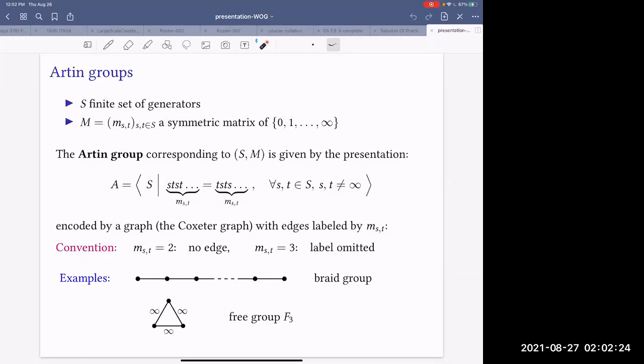If M_ST is infinite, we don't consider any relation between these elements. This sort of information is very conveniently encoded by the Coxeter graph, with vertices in correspondence with S and edges labeled by these M_ST numbers, with the convention that if M_ST is 2, we don't have any edge. And if M_ST is 3, we omit label. For example,